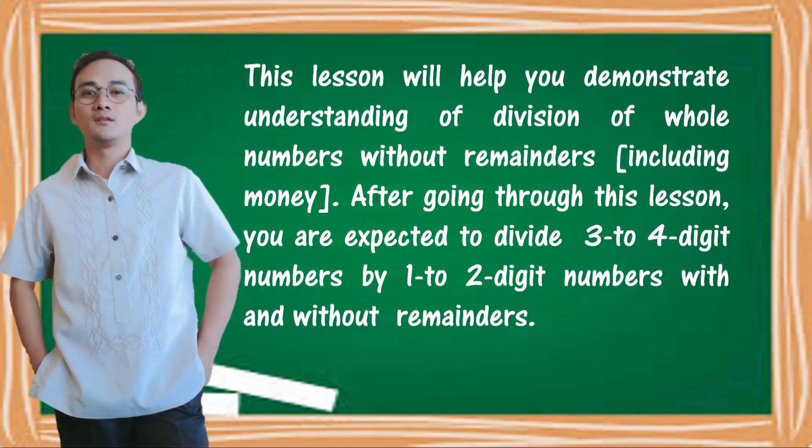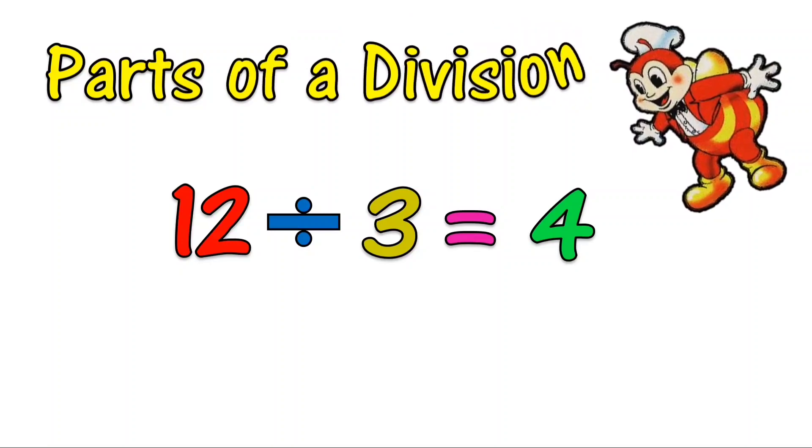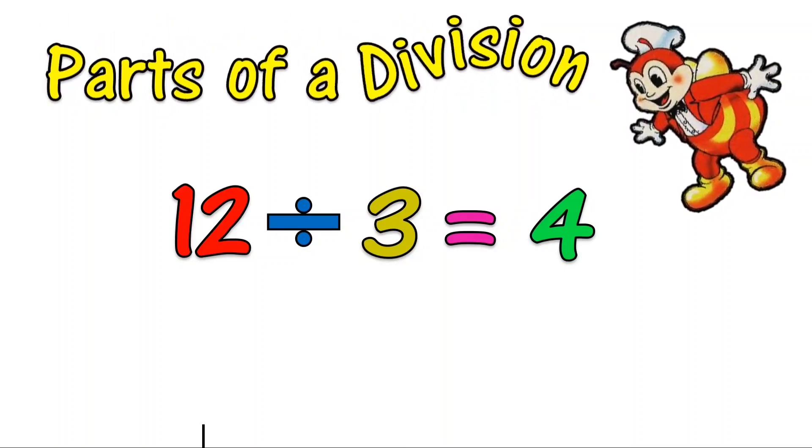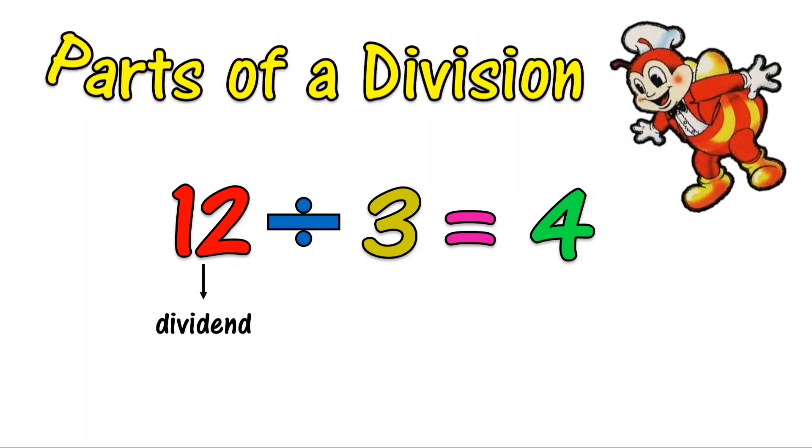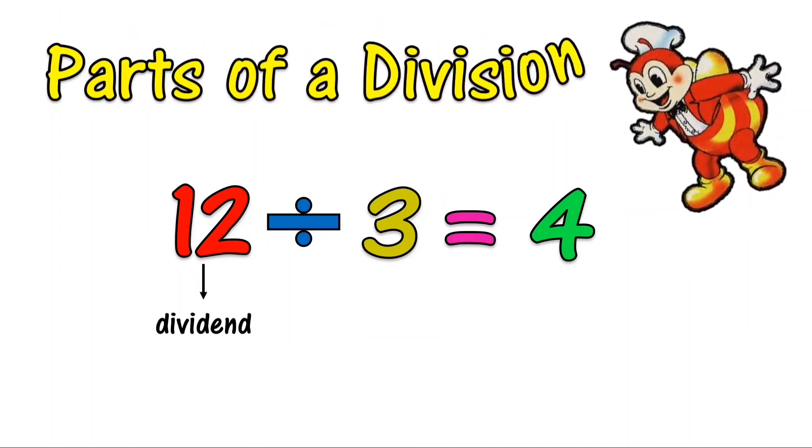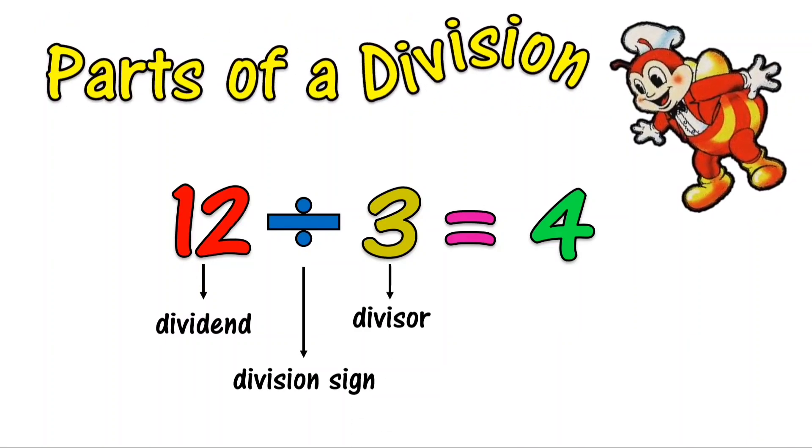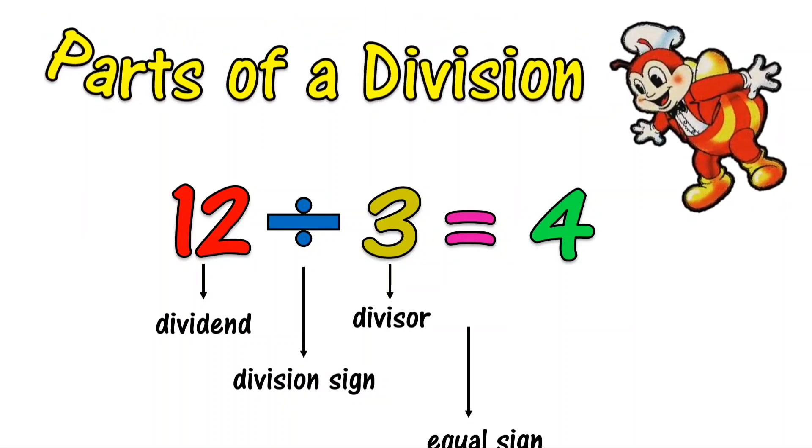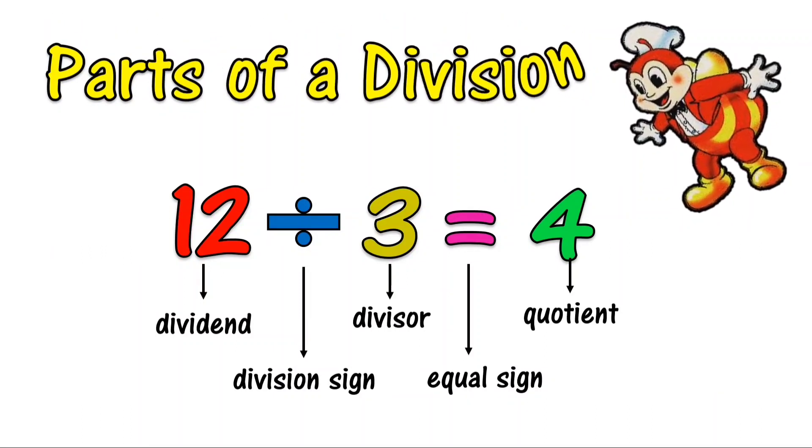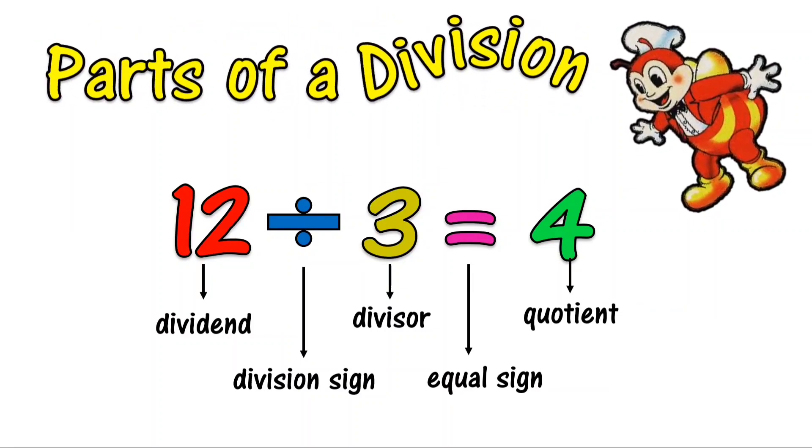This time, let us identify the parts of a division. In 12 divided by 3 is equal to 4, 12 is the dividend, we have the division sign, 3 is the divisor, we have the equal sign, and 4 is the answer. 4 is the quotient.